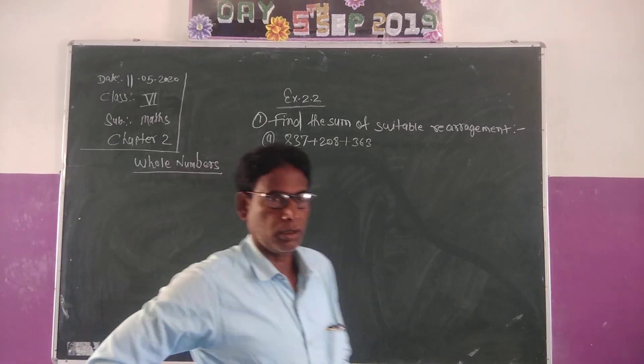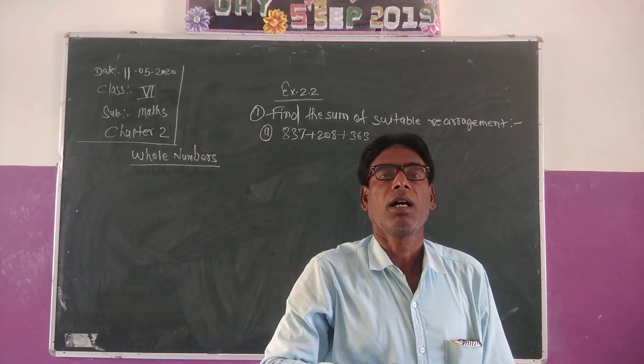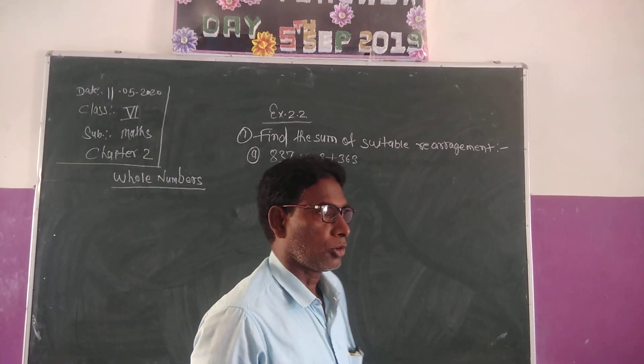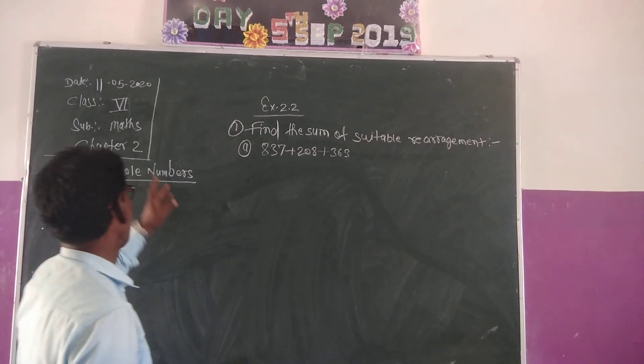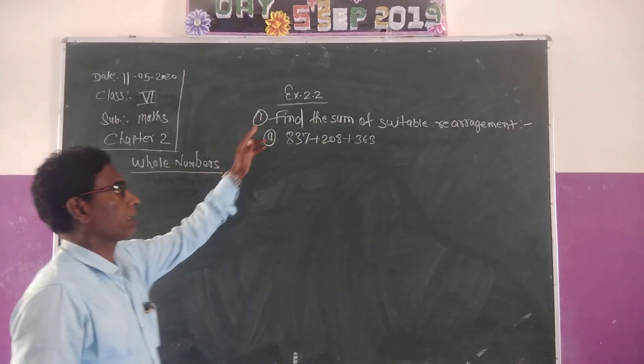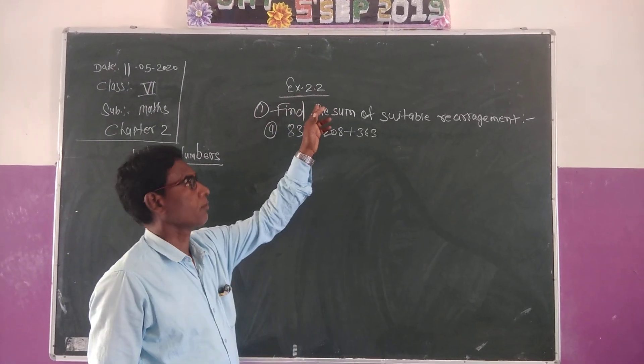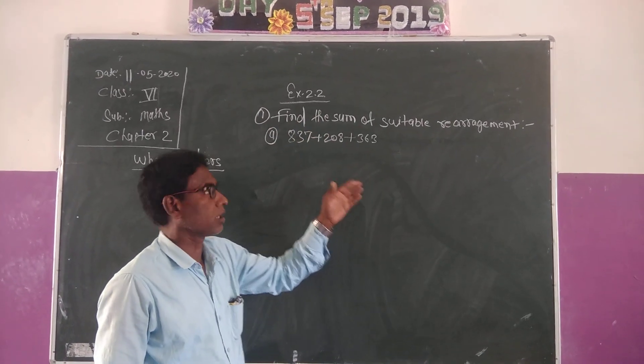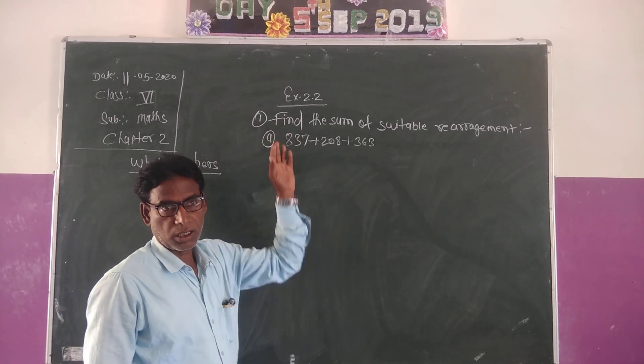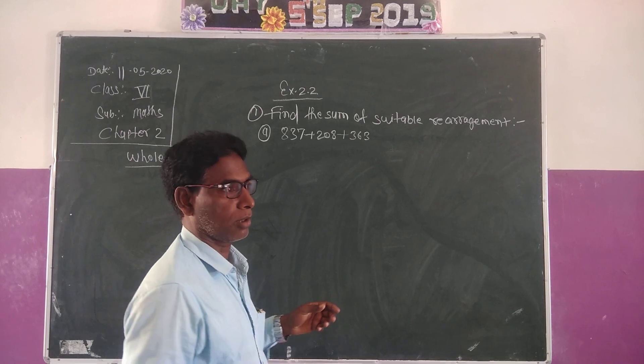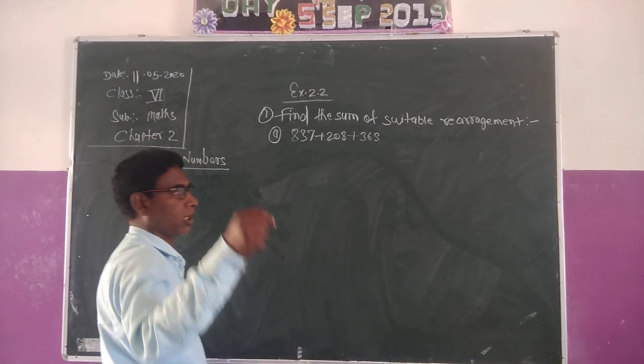Good morning everybody. Today I am in front of you in your math class. Chapter 2, Whole Numbers, Exercise 2.2. First question: Find the sum of suitable rearrangement. In the first question, there are two questions. I will solve the first question, you will solve the second question.